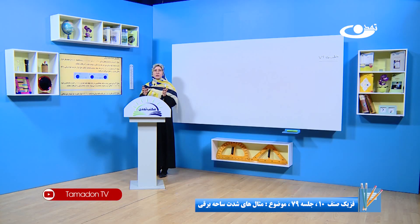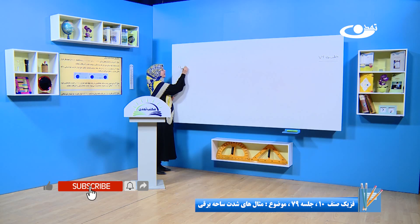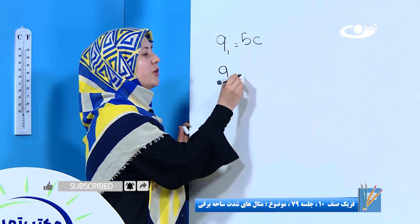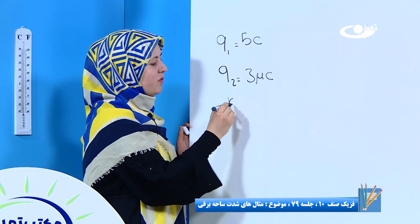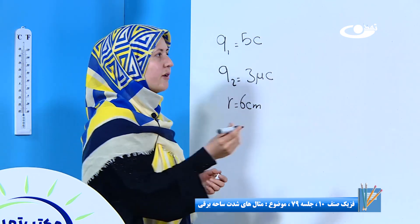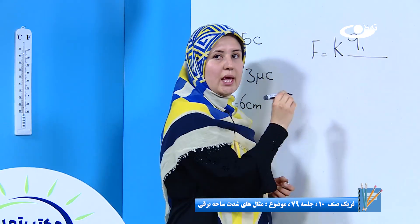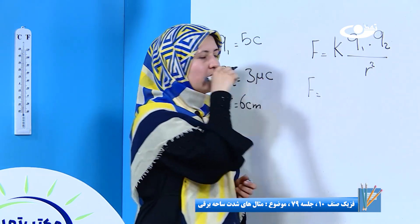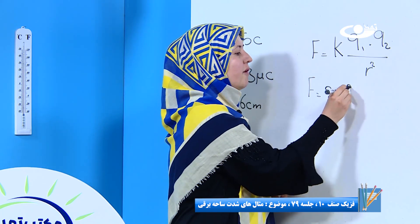پس یک بار دیگر می‌گیم که Q1 ما هست پنج کولمب و مقدار Q2 سه میکرو کولمب. هر دو ذره ما به فاصله ۶ سانتیمتر از هم دیگر قرار گرفتن. قانون کولمب یک رابطه داشت که F مساوی است با K ضرب Q1 ضرب Q2 بر روی R مربع. F مساوی است با مقدار K که ما داریم ۹ ضرب ۱۰ به توان ۹.